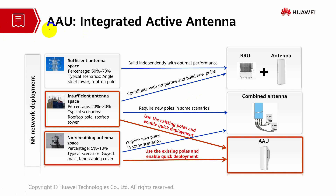What is AAU? AAU is known as active antenna unit. It is also known as integrated active antenna. When constructing multi-RAT radio access technologies and multi-band networks in the MBB era, or mobile broadband, there are a lot of insufficient antenna space, making it difficult to form a site development.